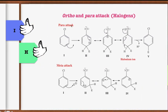For para attack, the resonance structure also shows formation of a halonium ion. In contrast, for meta attack there is no such formation of a halonium ion. Therefore, you do not get meta-substituted product for halobenzene — you get ortho and para substituted products.